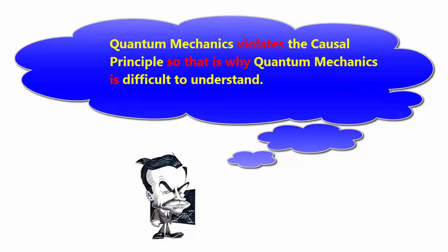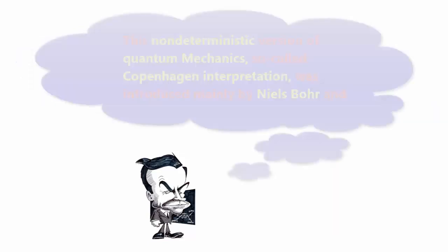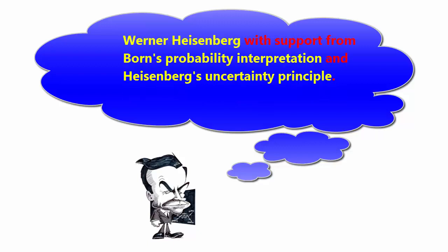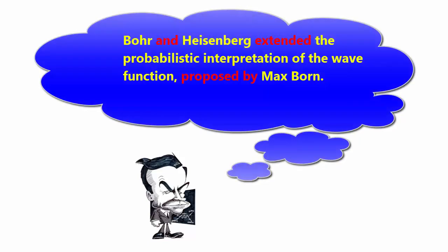This non-deterministic version of quantum physics, the so-called Copenhagen interpretation, was introduced mainly by Niels Bohr and Werner Heisenberg, with support from Born's probability interpretation and Heisenberg's uncertainty principle. Bohr and Heisenberg extended the probabilistic interpretation of the wave function proposed by Max Born.